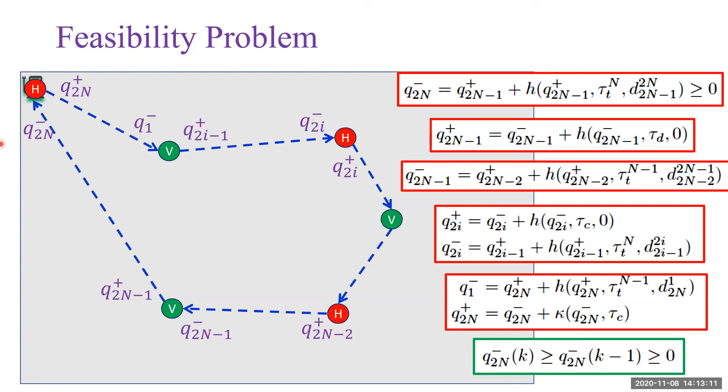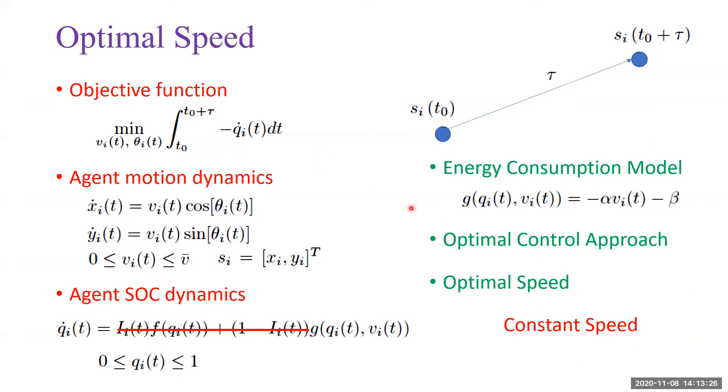Once we obtain q_{2n}^-, we can calculate the minimum requirement for all locations. Here we derive the optimal speed for agents given the distance between two locations and the time τ.